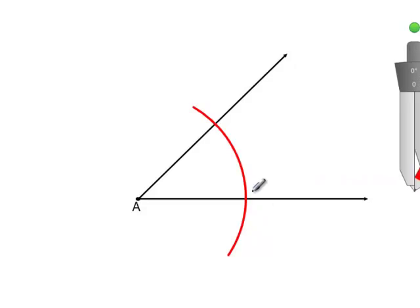Then what you're going to do is label the two intersection points B and C.